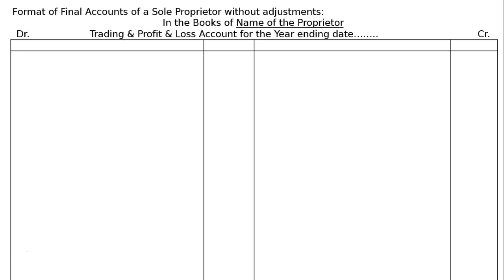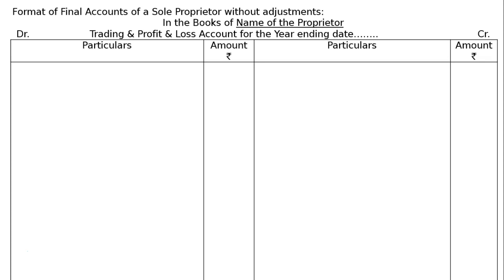The basic format has a debit side and a credit side. It is called the Trading and Profit and Loss Account for the year, with an ending date. This trading and P&L account is prepared for the whole year — or for a period, say 6 months — but usually a year. The debit and credit sides both have particulars with amount and rupee symbol columns.